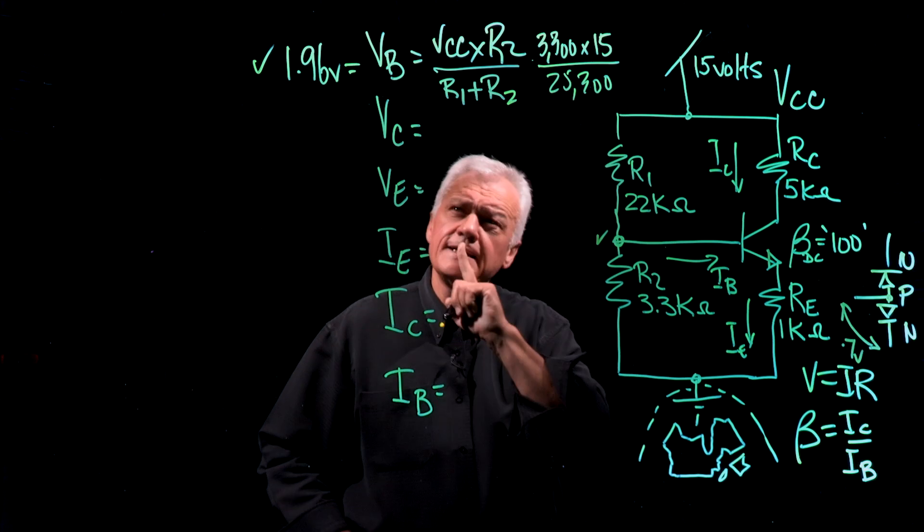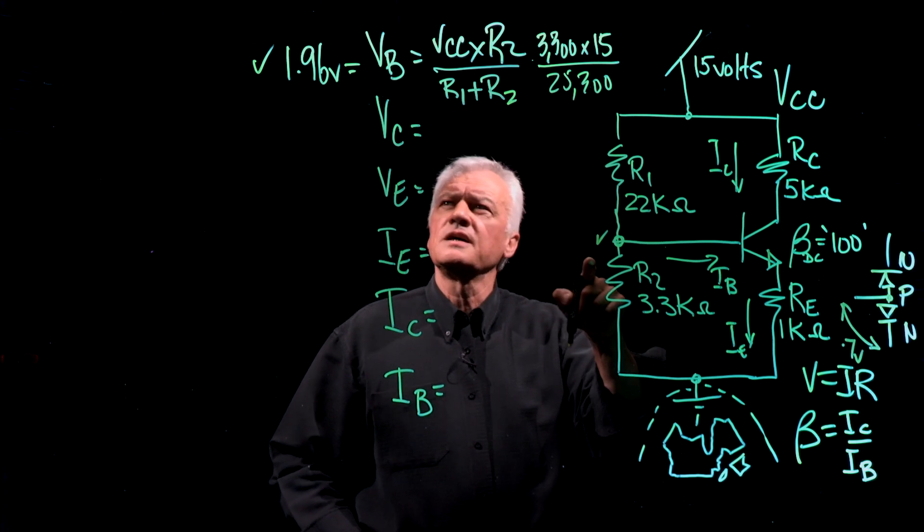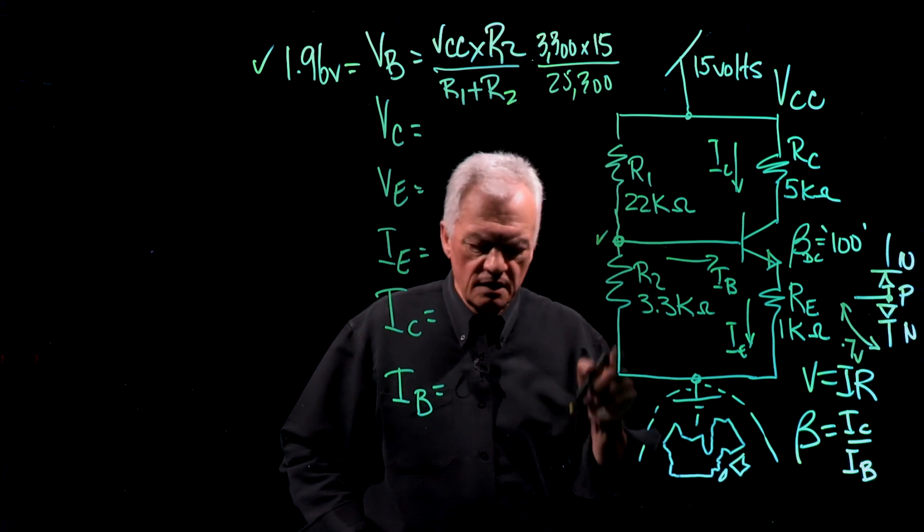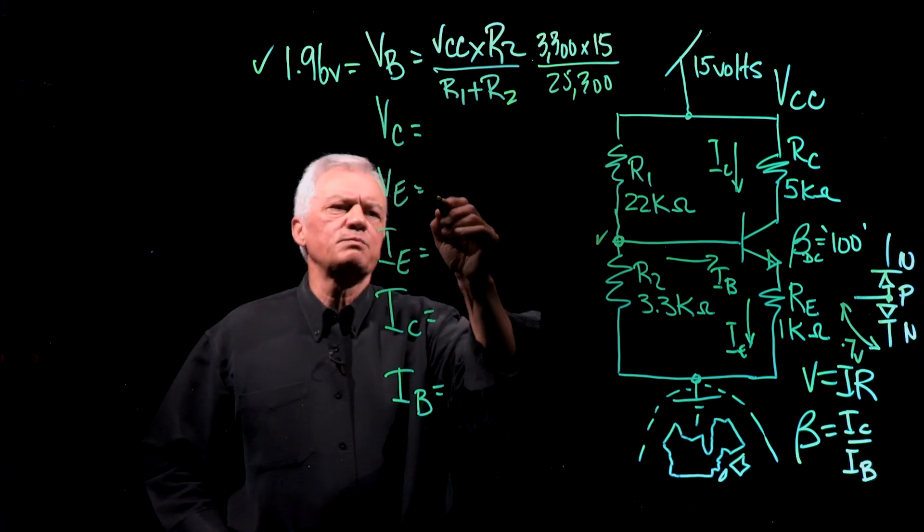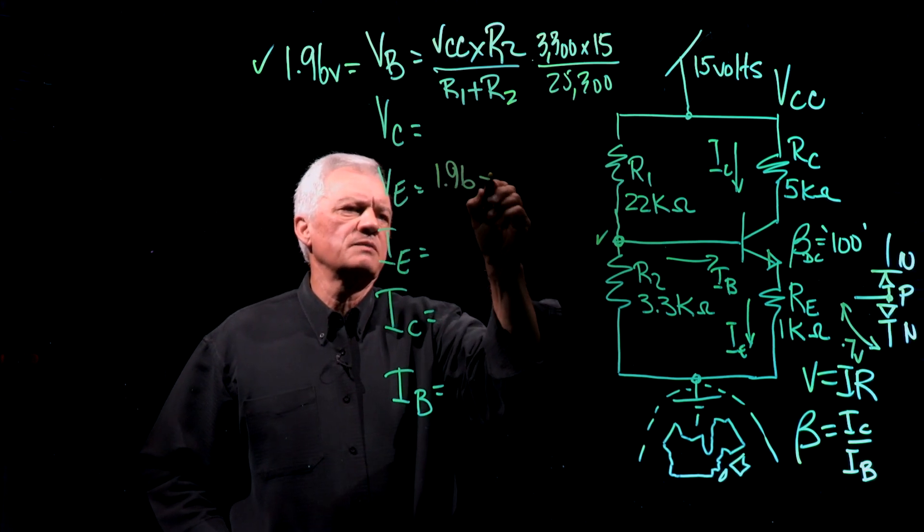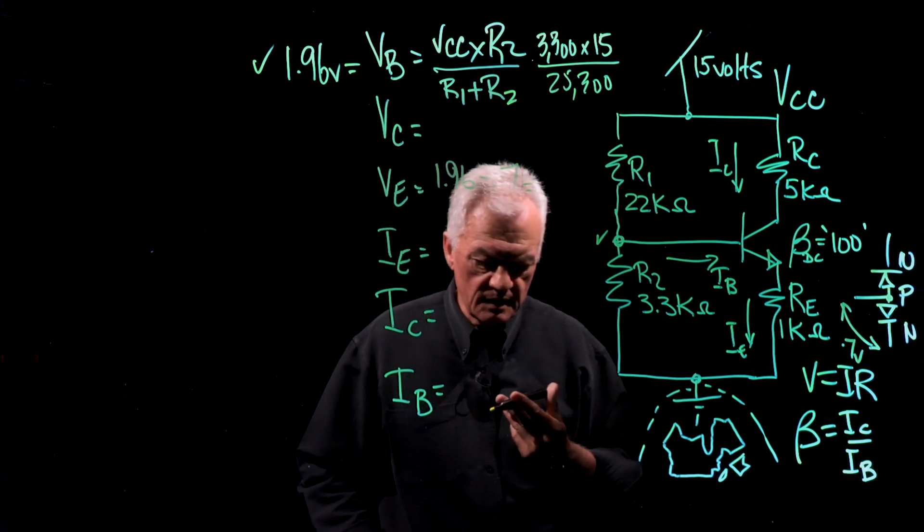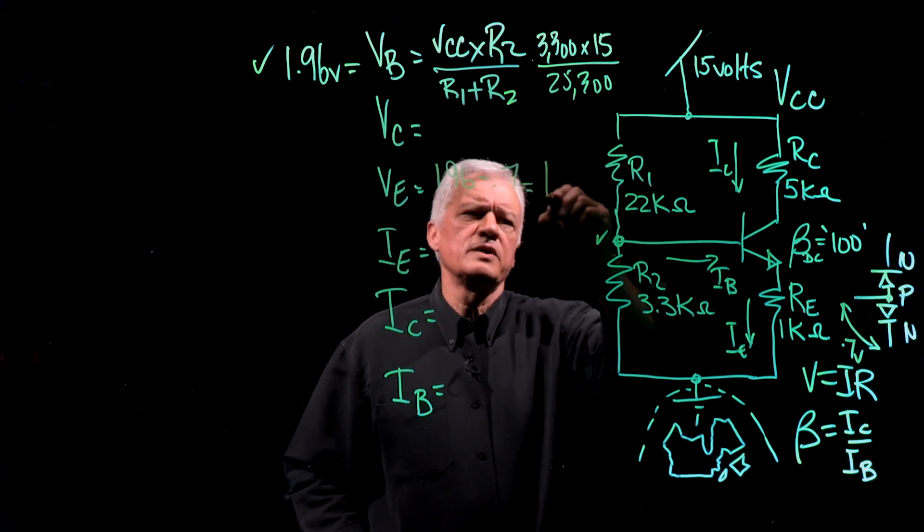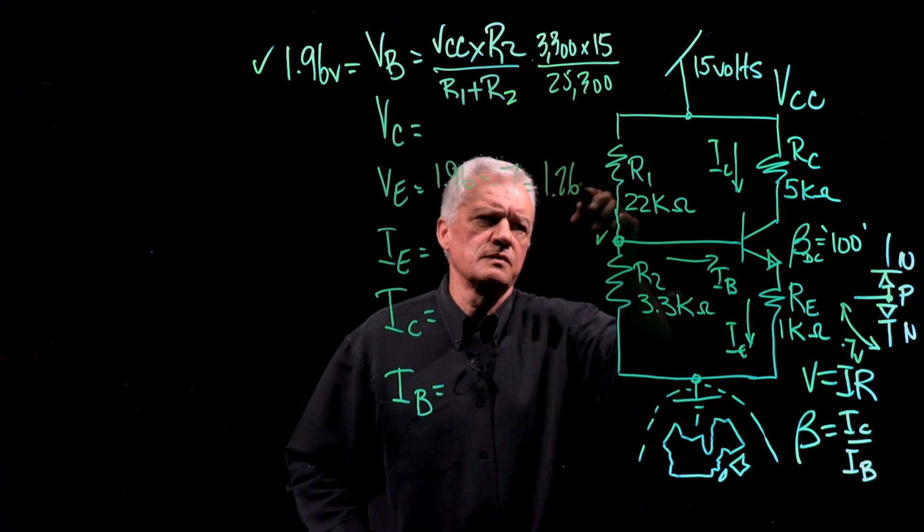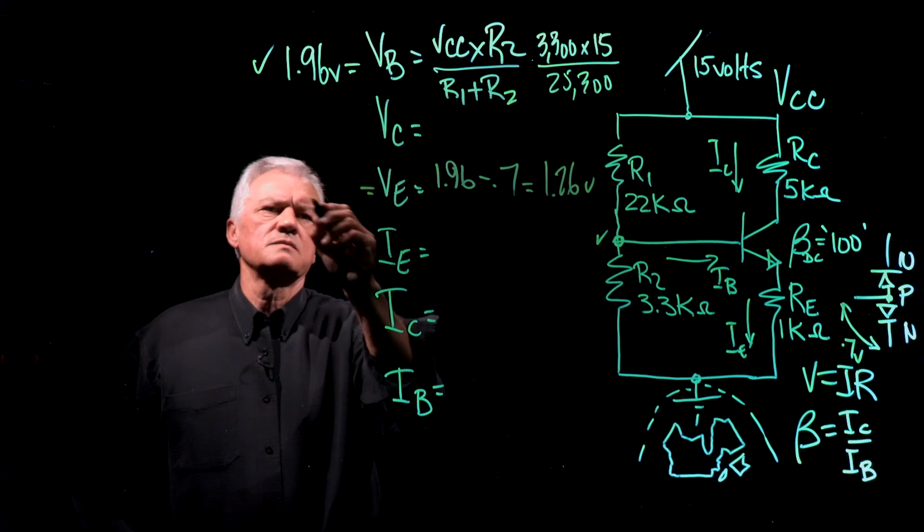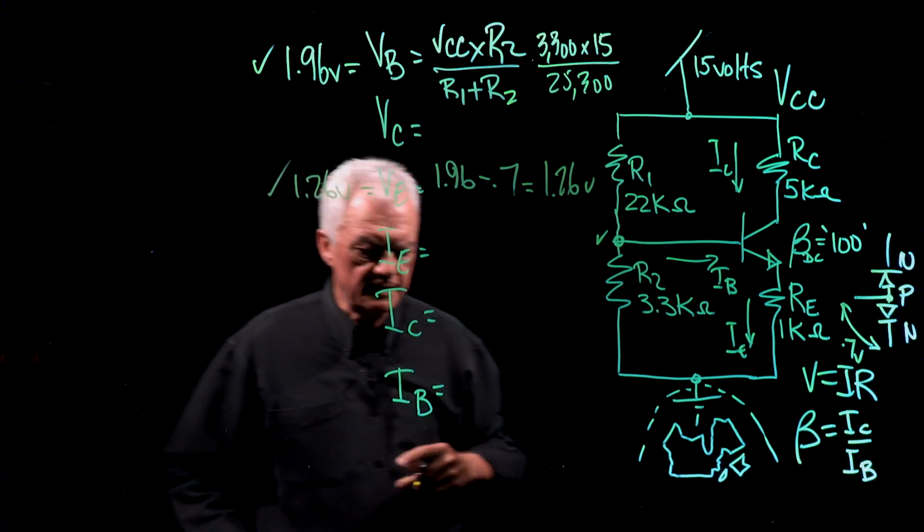So we do recall that the voltage drop across this particular junction or diode, silicon diode, is 0.7 volts. That being the case, if we have VB sitting here at 1.96 volts, then what would this be? VE would be 1.96 minus 0.7, and that would be equal to, correct, 1.26 volts. I think that's reasonable. That's done.